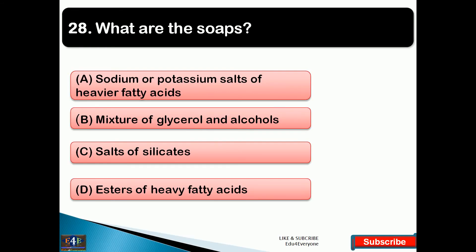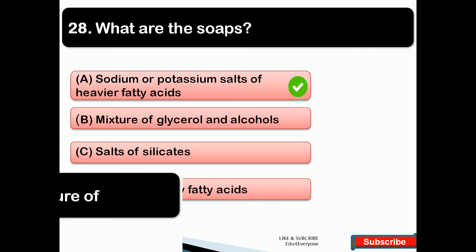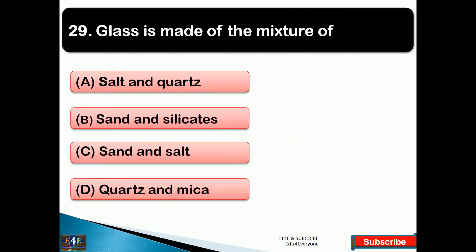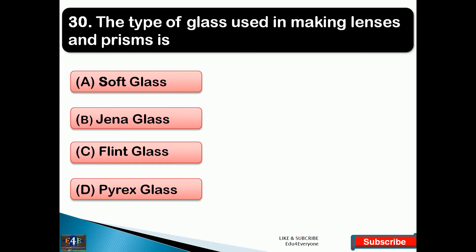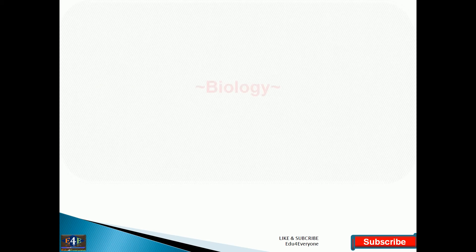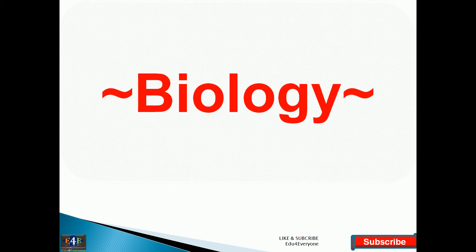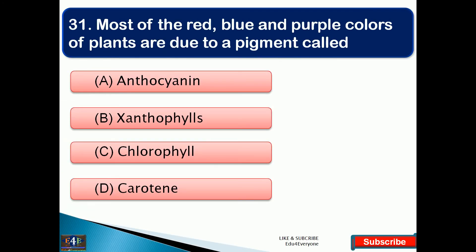What are soaps? The right answer is option A — soaps are nothing but sodium or potassium salts of heavier fatty acids. Glass is made up of a mixture of — right answer option B, that is sand and silicates. The type of glass used in making lenses and prisms is — right answer option C, that is flint glass. Now we'll cover some questions related to biology.